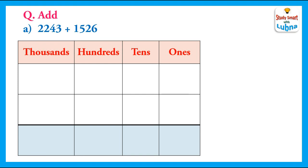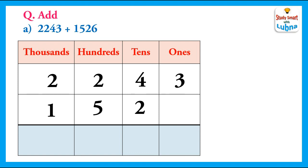The place values of 4-digit numbers are ones, tens, hundreds, and thousands. So, we will copy 2243 below their place value. Similarly, we will copy the other 4-digit number 1526 below their place value. After this, we will add them.